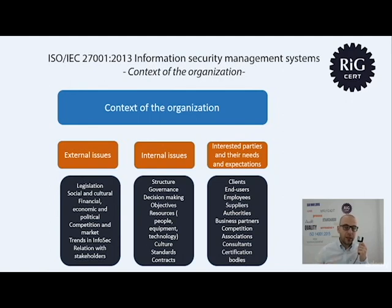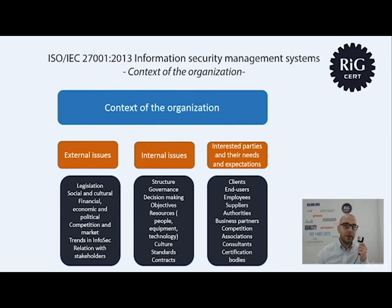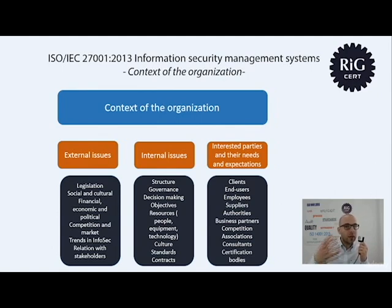All of these interested parties have requirements for the organization in terms of information security. For example, clients expect their personal information to be protected. Authorities expect the organization to be in line with legal requirements referring to information security, such as privacy legislation or personally identifiable information legislation. Certification bodies expect the organization to respect the requirements of ISO 27001 to obtain and maintain certification. It is not mandatory to document them, but you will have a hard time demonstrating compliance without a simple Excel sheet listing interested parties and their requirements.